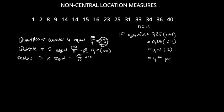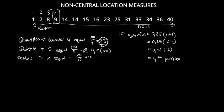That means the fourth data value in our data set is where the first quartile is. Counting to the fourth value, we get 9 as our first quartile. This is the bottom quarter of our data set; the first quartile separates the bottom 25 percent from the top 75 percent.